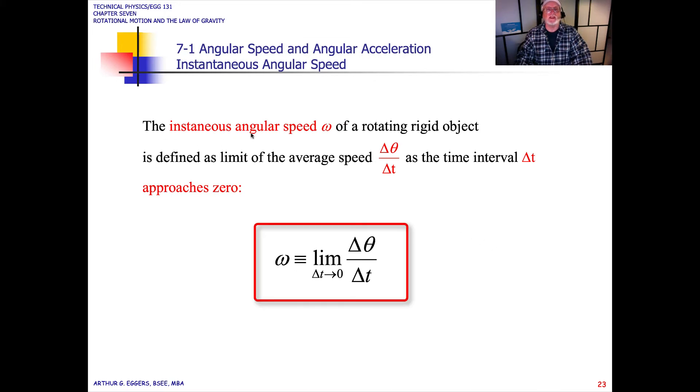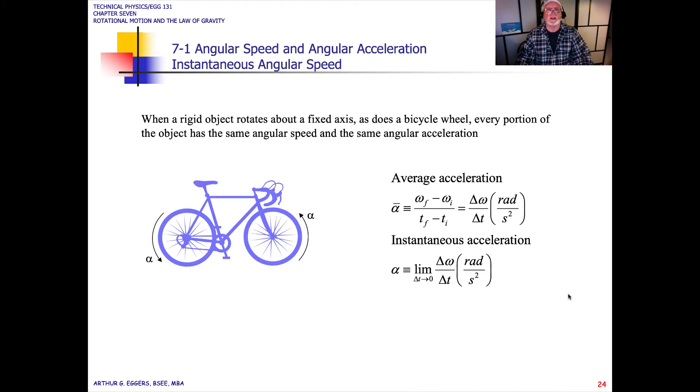Again, we look at the instantaneous angular velocity or speed omega of the rotating rigid object. We define it as a limit of the average speed delta theta over delta t as the time interval delta t approaches 0. We're looking at a snapshot, one instant in time, collapsing down the time interval and taking one thin swipe through the center to determine what the instantaneous speed is.